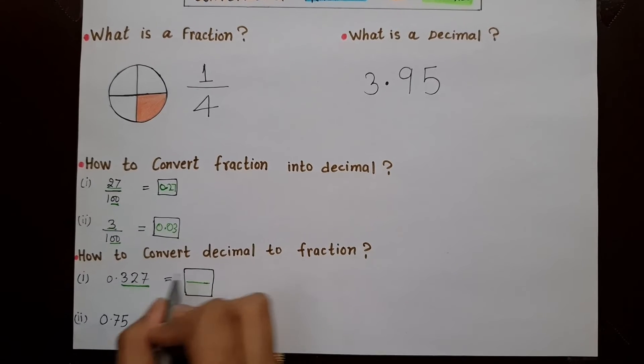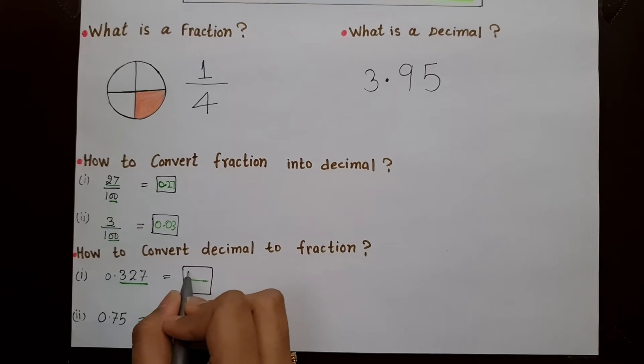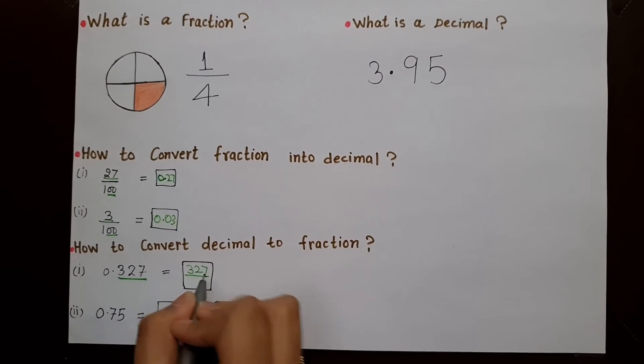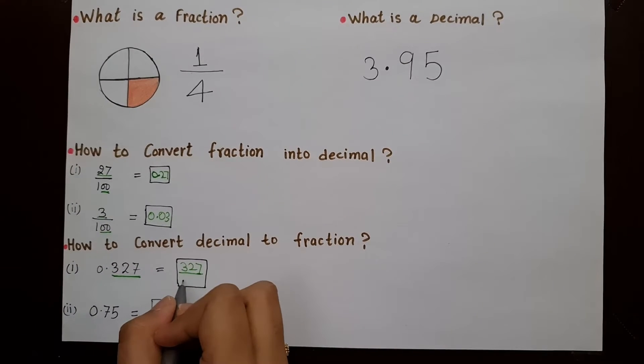So we have to write the number here as the numerator, and the denominator is 1000.